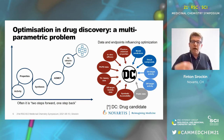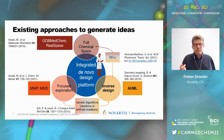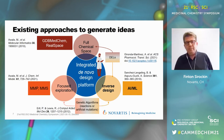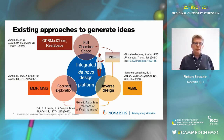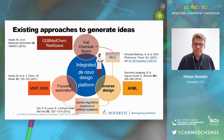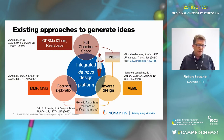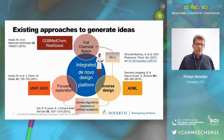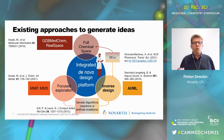How are ideas generated in medicinal chemistry projects? First, you have the human brain, which works very well and can be quite efficient. Then you have different families of in-silico methods. At the bottom left, you can see focused exploration methods such as molecular matched pairs and molecular matched series. They are well-established methods, very interesting because they tend to reproduce how chemists work. On the other hand, they are limited to known chemical space and restricted to what is generally known.